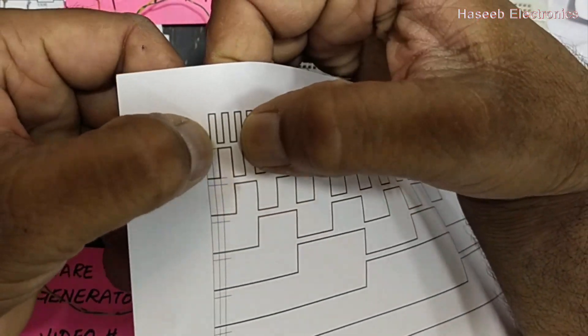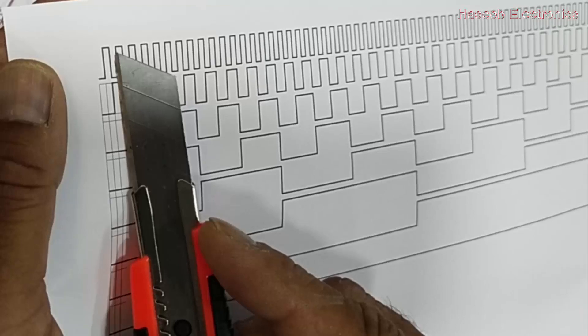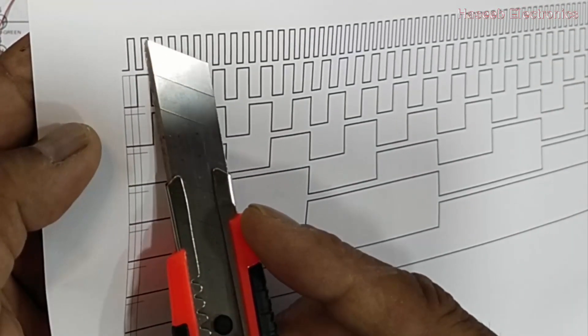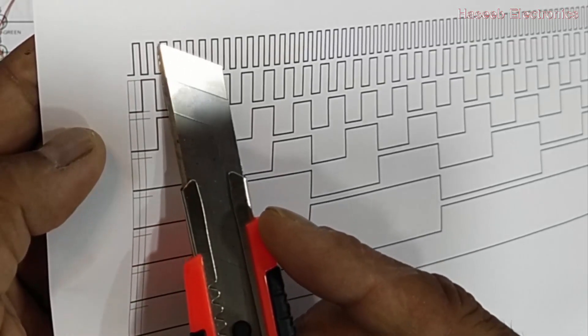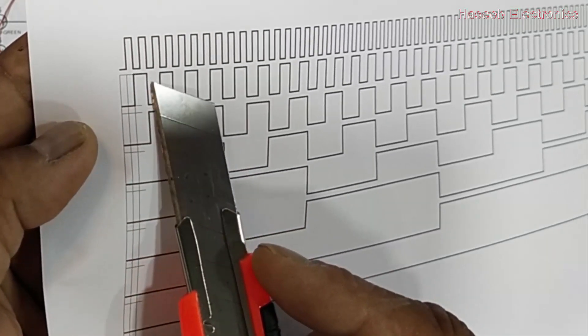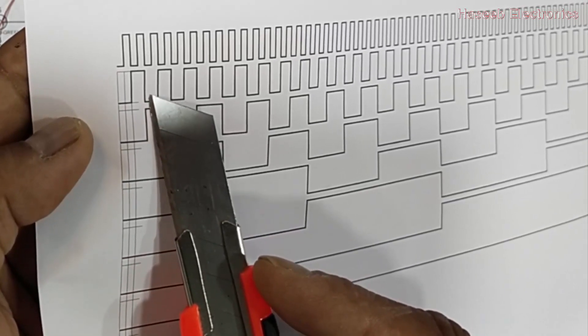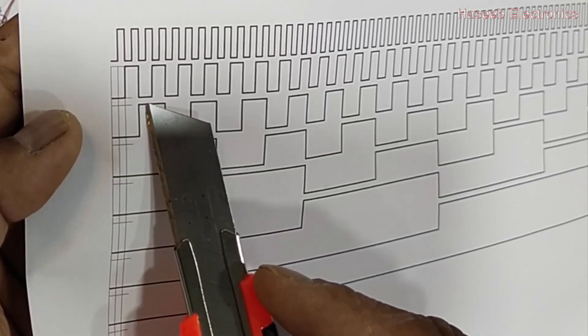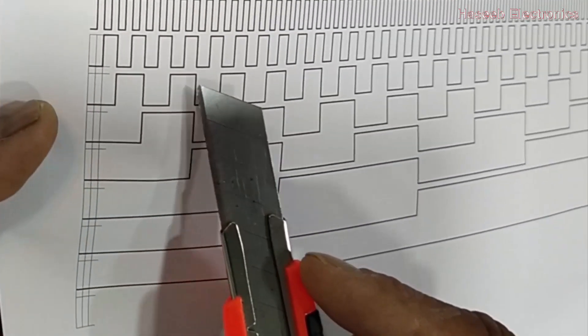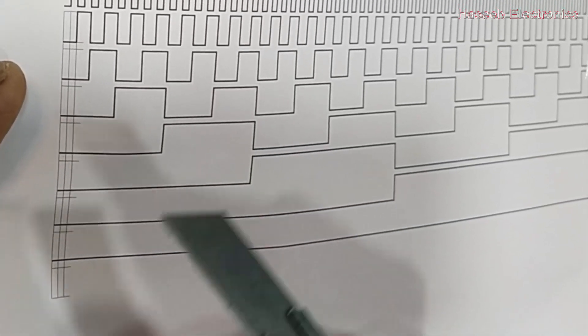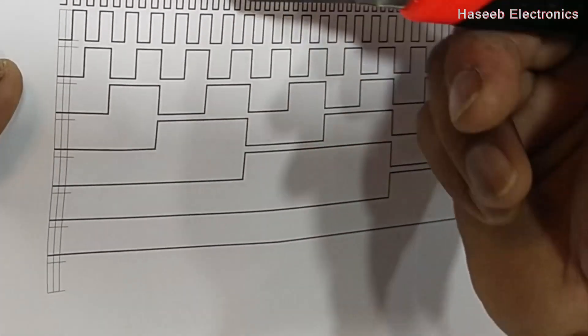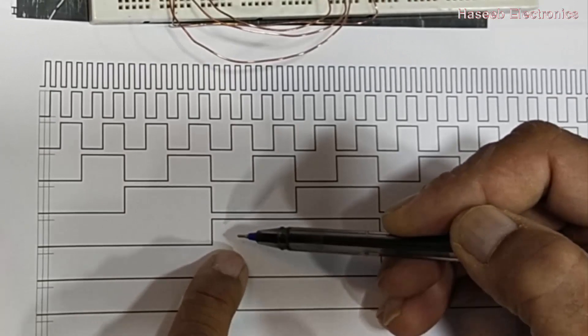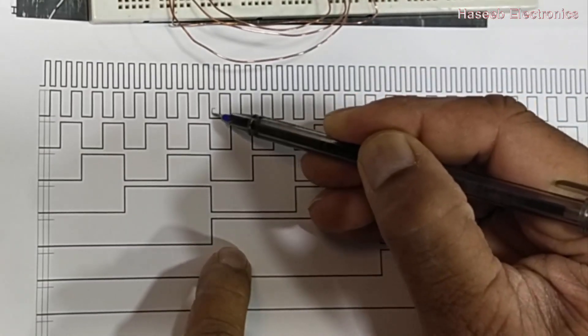Because it is in cascaded stages, it is working as a master-slave operation. Let's see this timing diagram. When the first trailing edge is coming of this first pulse, it will go high and remain high until the next trailing edge. At the first trailing edge, the first output shifted from low to high. At the second trailing edge, it shifted its position. When it is coming low, at its trailing edge, the next output will go high.